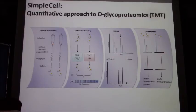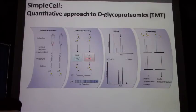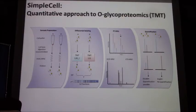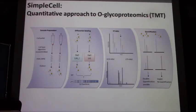We also do a parallel TMT approach, labeling with distinct TMT channels to avoid overlap. Your precursors are on top of each other, boosting the intensity. You do quantification on your MS/MS fragment ions. In this case, single site determination is more accurate because we found TMT works better here, and you also double the number of identified cases.